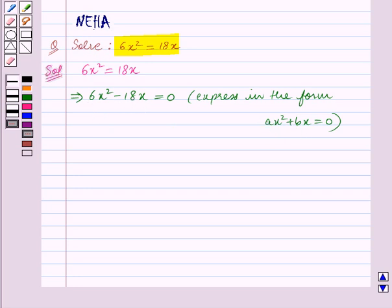We will now factorize the given equation. So this implies, taking 6x common, we get 6x into x minus 3 is equal to 0.